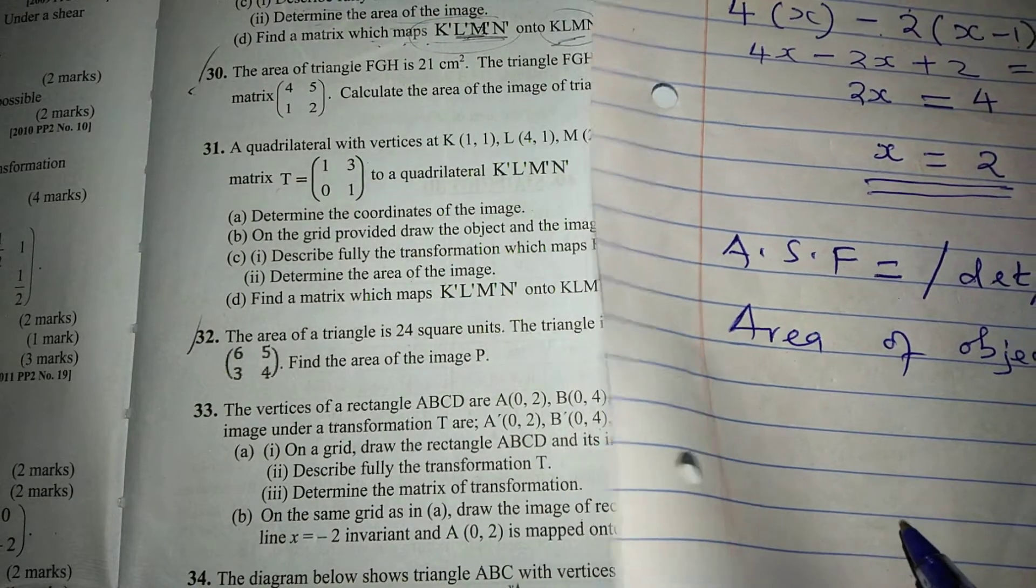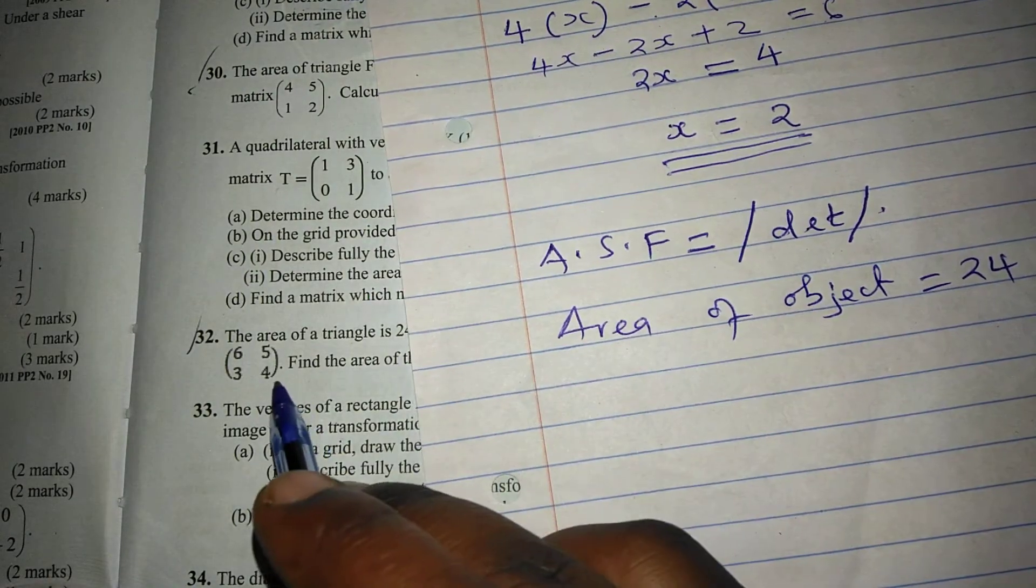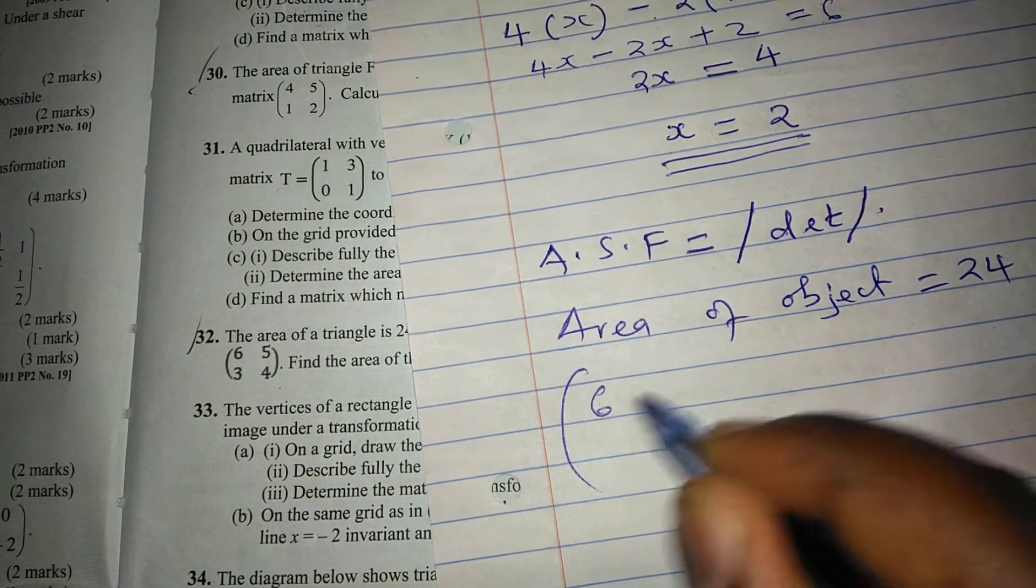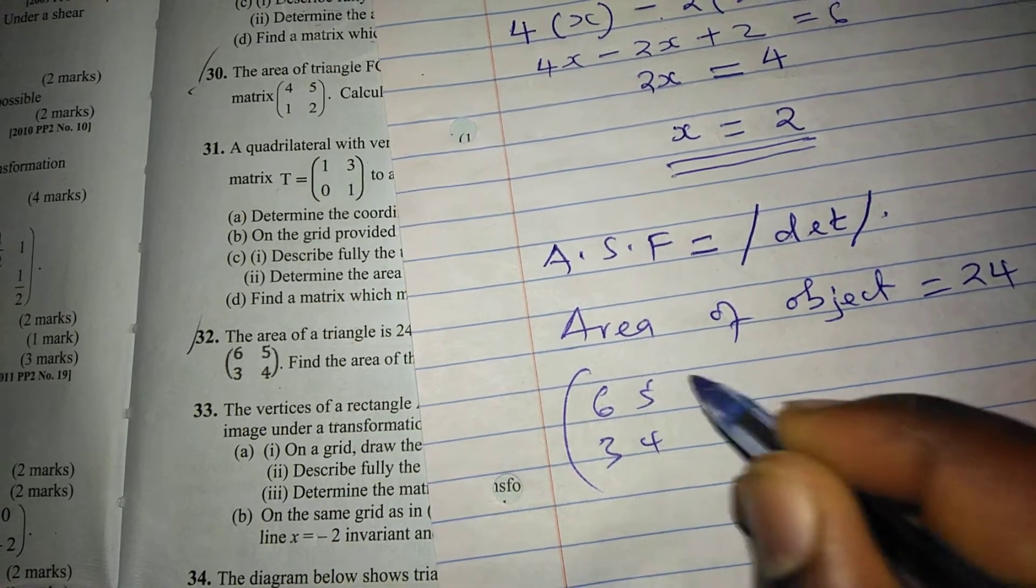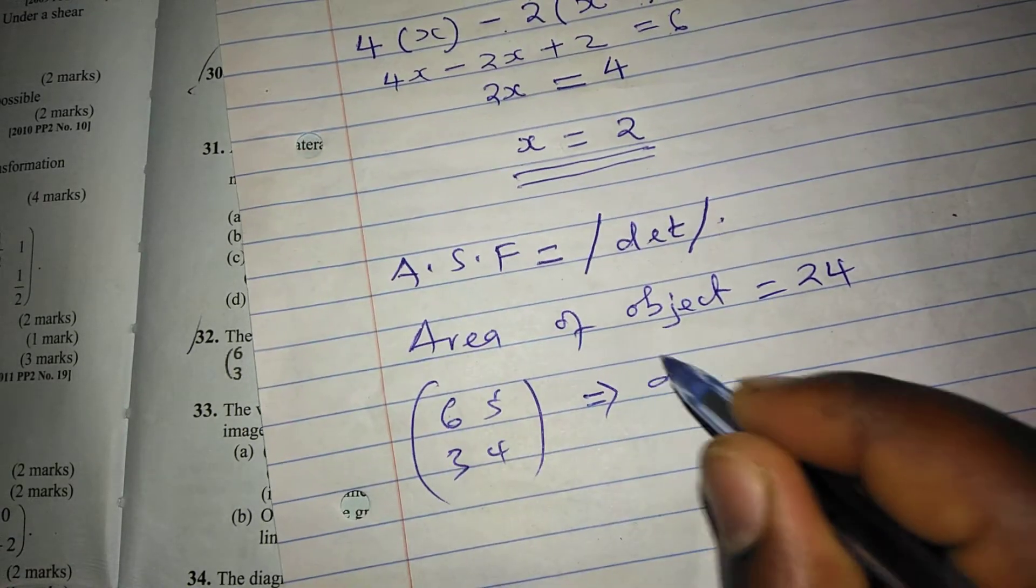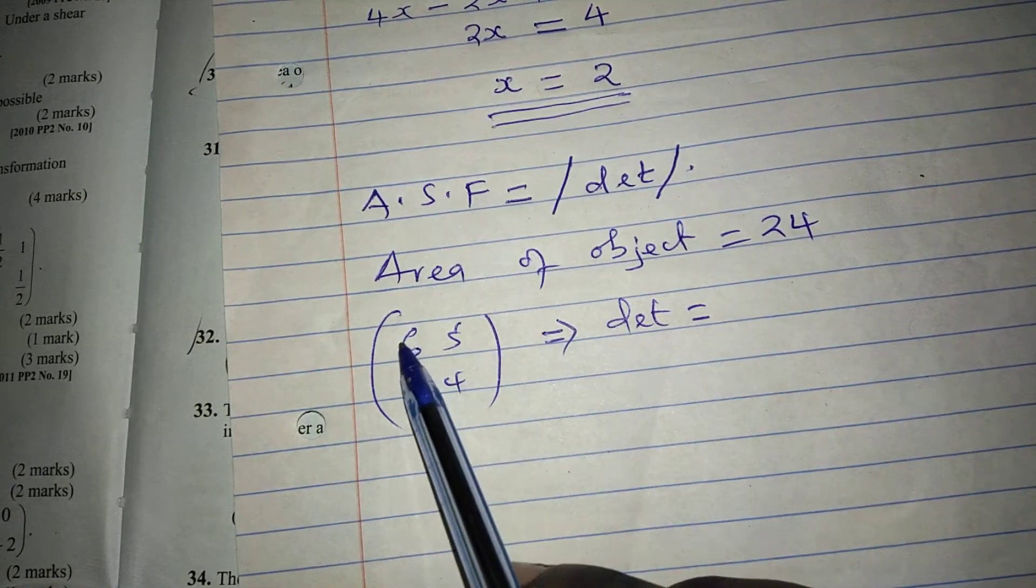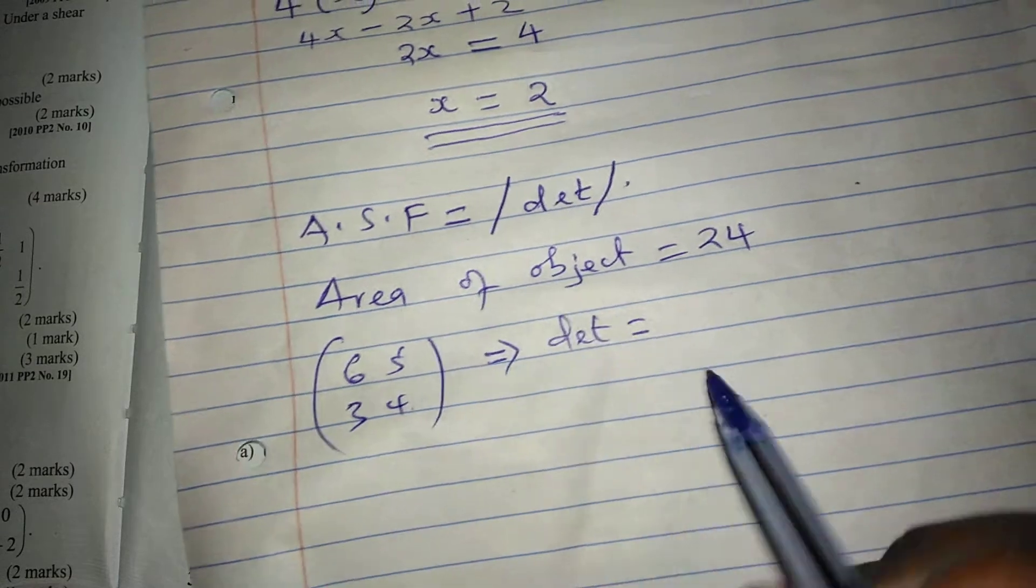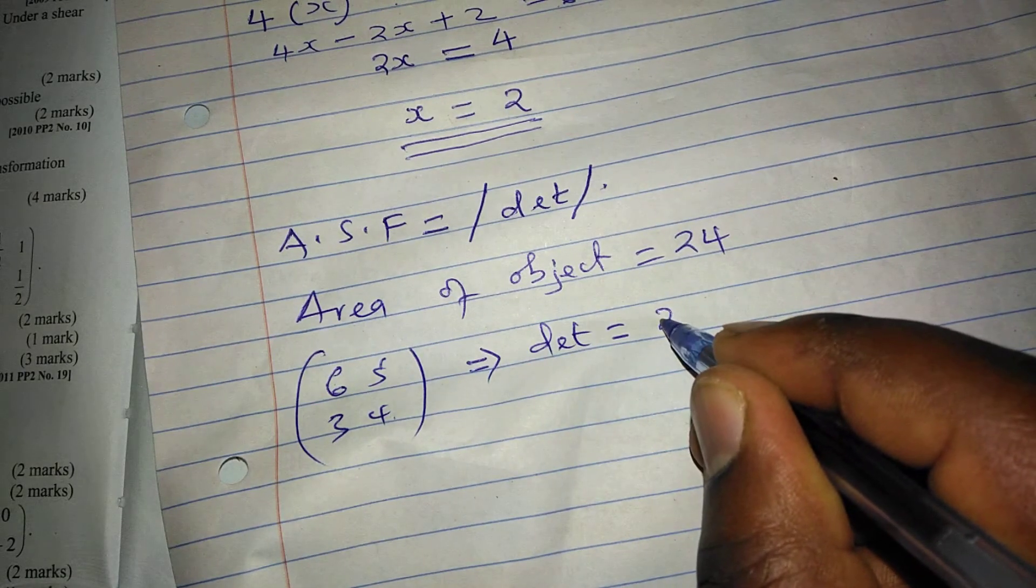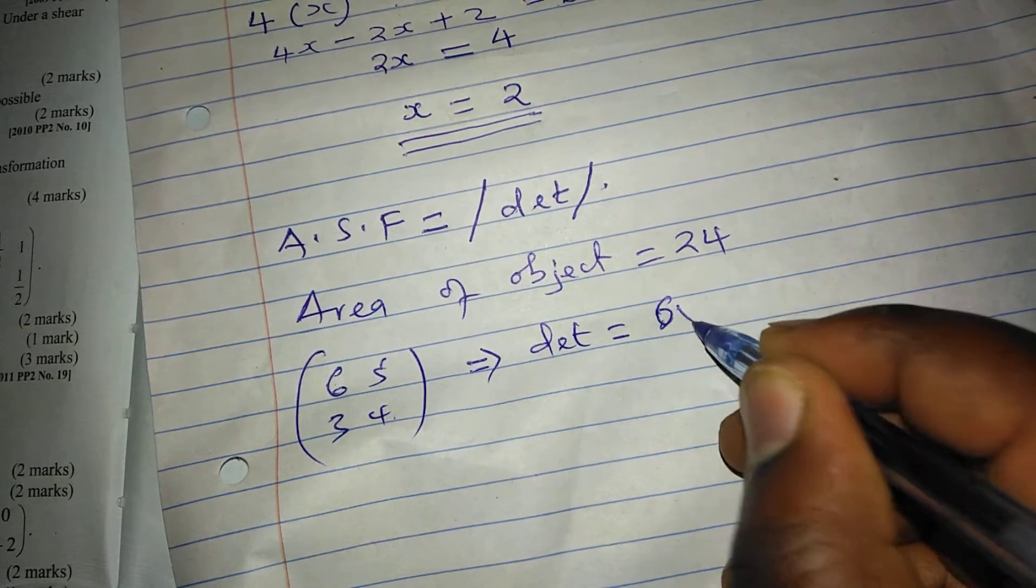And we don't have area of the image, but we have the transforming matrix, which is (6,5,3,4), such that we can first get the determinant. The determinant of this matrix is given by the product of elements in the leading diagonal, which is 6 times 4.